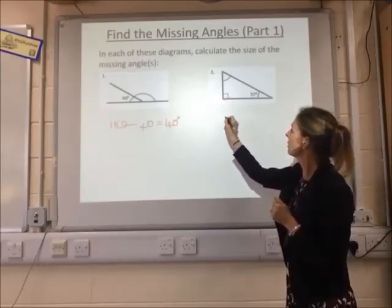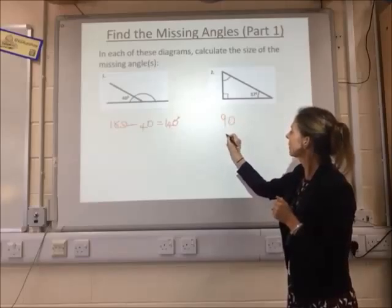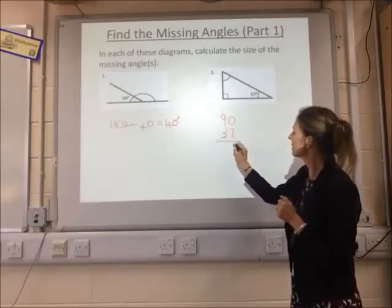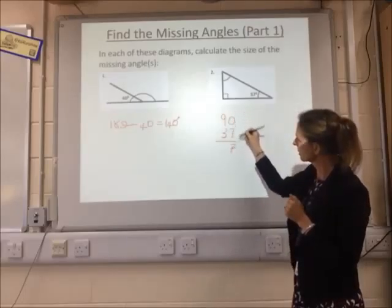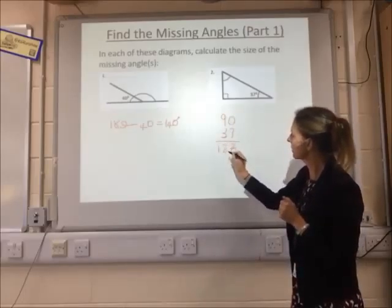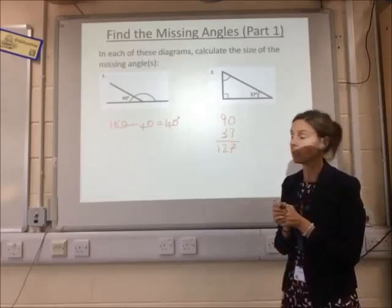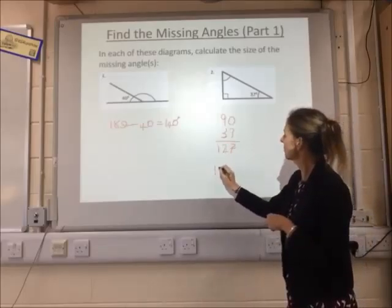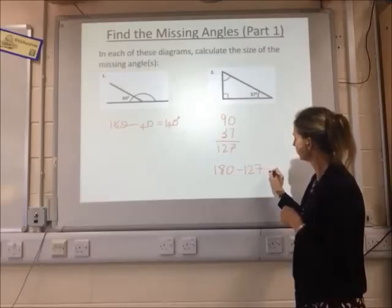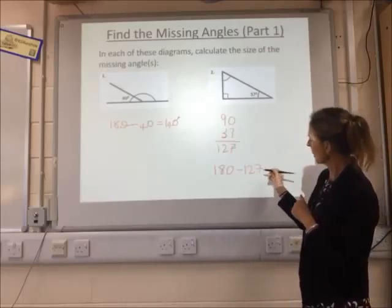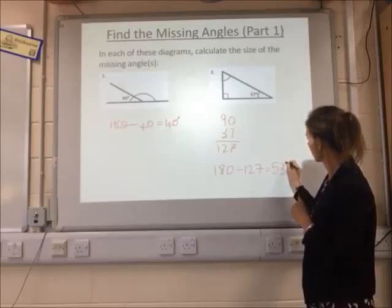So on this one we've got 90 degrees and 37 degrees, which gives me, if you do your column addition, 127 degrees. Then we need to take that from 180. 180 take away 127, work it out and you get 53 degrees.